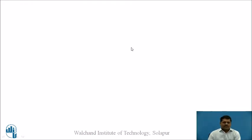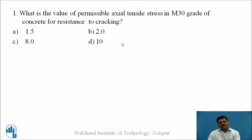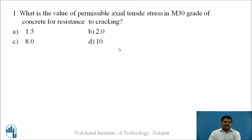Now for a practice question: what is the value of permissible axial tensile stress in M30 grade concrete for resistance to cracking? Pause the video and interpret the question using the table values. The answer is 1.5 MPa.